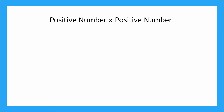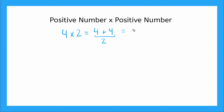So let's start with what we know — multiplying two positive numbers together. Let's say we have four times two. What we're really saying is four added together two times. So four plus four. How many times are we adding them together? Two times, because of that two. And that will give us the number positive eight.